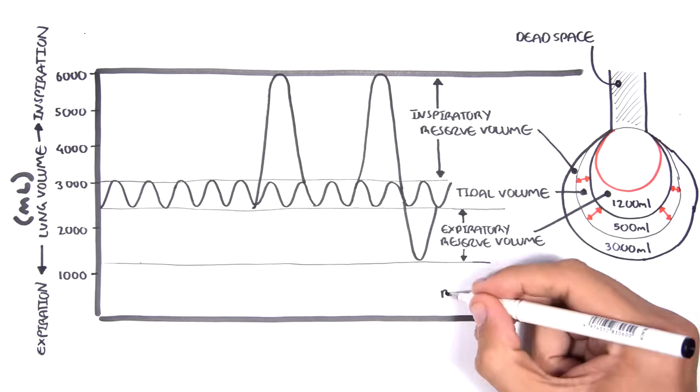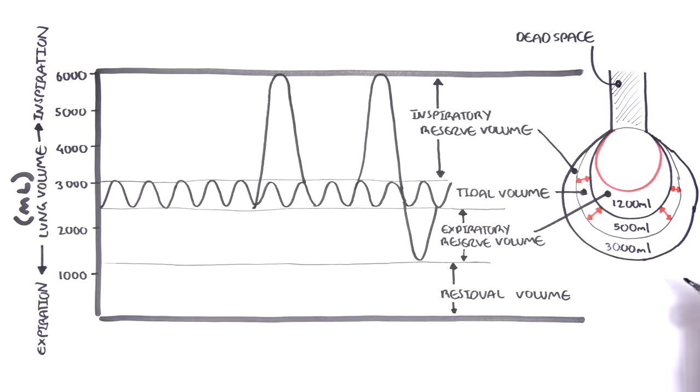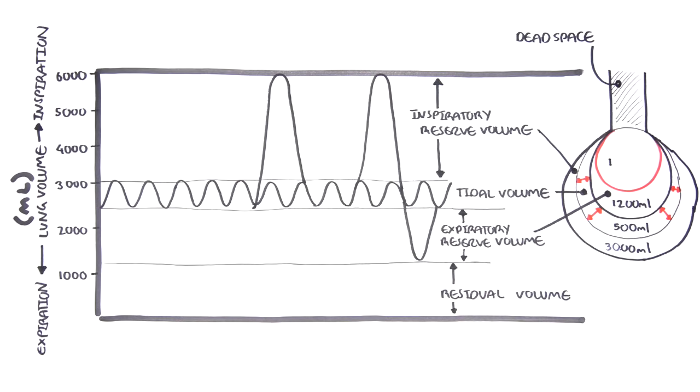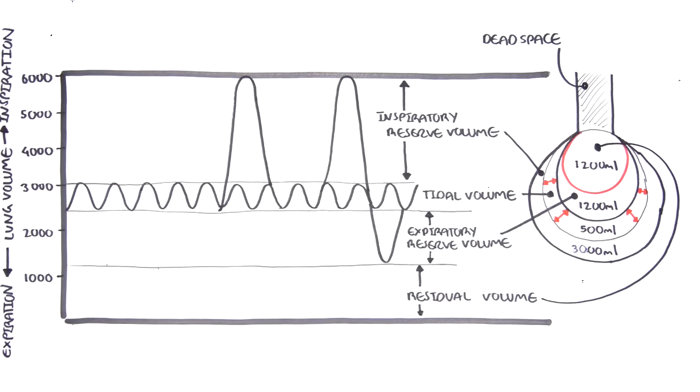And the air left in the lungs after a maximal expiratory effort is the residual volume, which is about 1 liter. So, an adult male will typically have a total lung capacity of 6 liters, a female 4.5 liters.